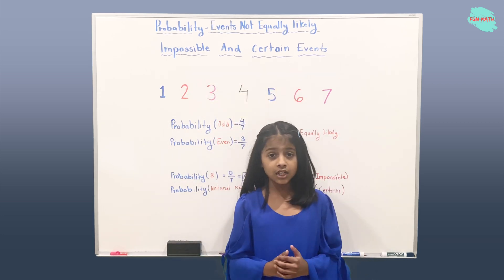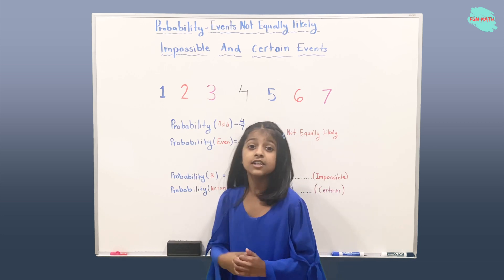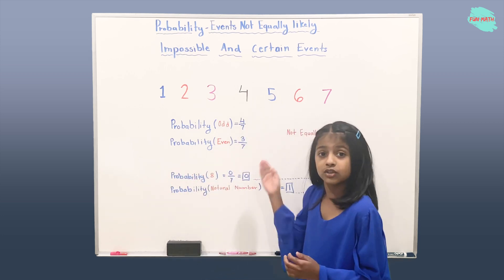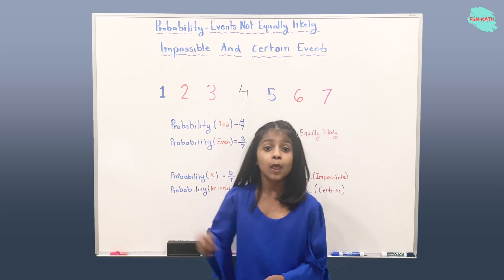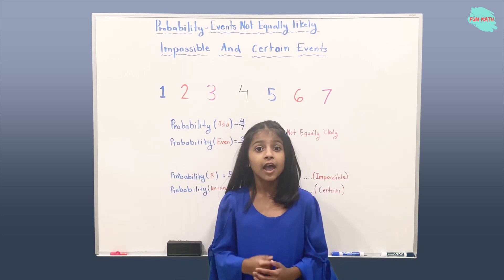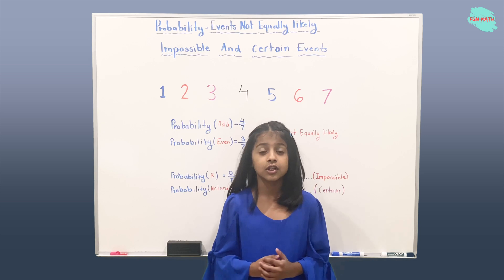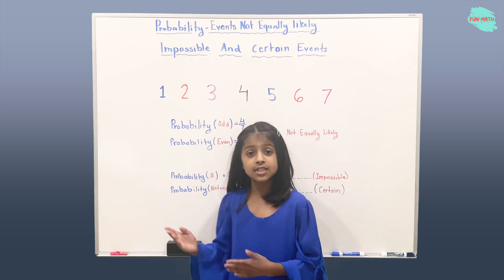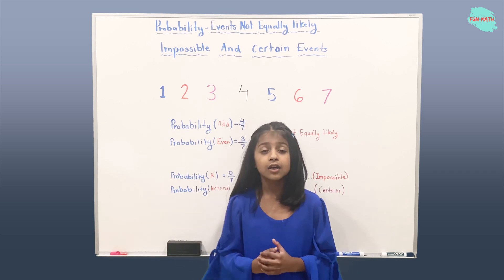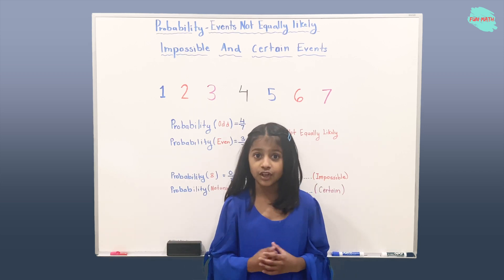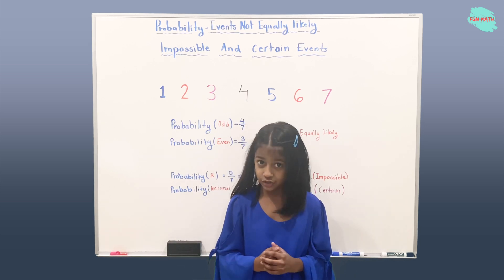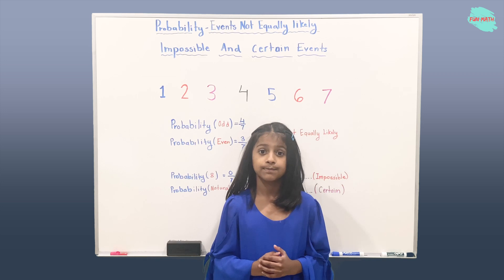Here you can see seven numbers from one to seven, and you know that these numbers, one to seven, are all natural numbers.